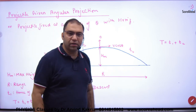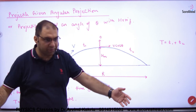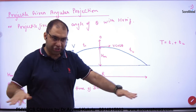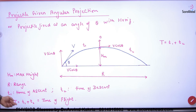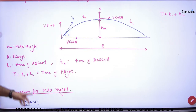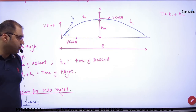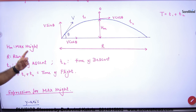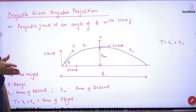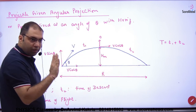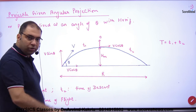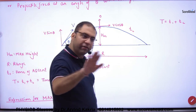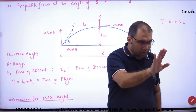So we have maximum height, time of ascent, and time of descent. How much distance has the projectile covered on the ground? That distance is R, which we call the Range. So to summarize: H_max means maximum height, R means range, T1 means time of ascent, T2 means time of descent. The total time the projectile was in the air is T1 plus T2, and T — capital T — is called the time of flight.